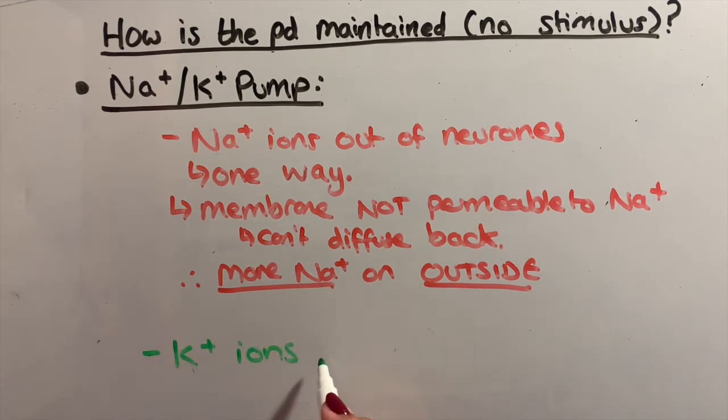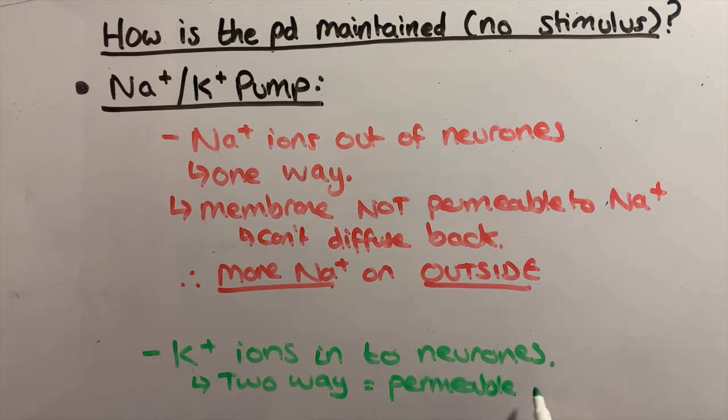So now the potassium. The sodium-potassium pump also moves potassium ions into the neuron, but the membrane is permeable this time to potassium ions, so they are able to diffuse back through the potassium ion channels. This makes the outside of the cell positively charged compared to the inside, as shown earlier.